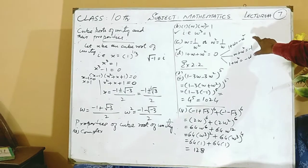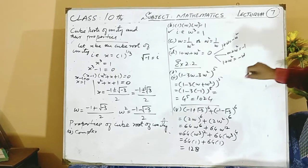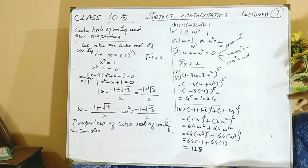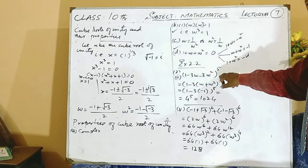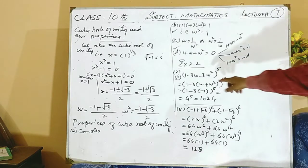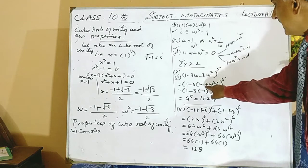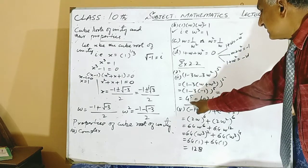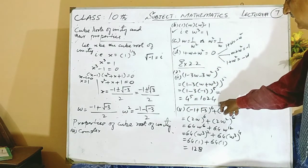So these are the four properties of cube roots of unity. Now we will use these properties while solving the questions of exercise 2.2. For example, in question 2, part 2, we have to find the value of this expression. Firstly, you should take minus 1 common; it will become omega plus omega square. This gives minus 1, and after simplification you will see that 4 raised to the power 5 is equal to 1024.